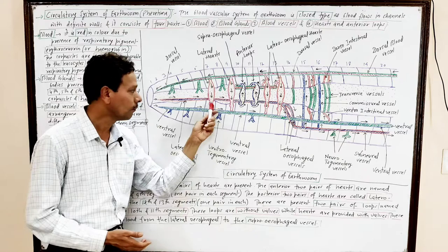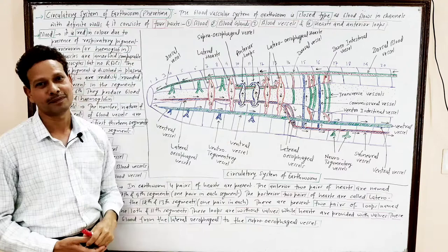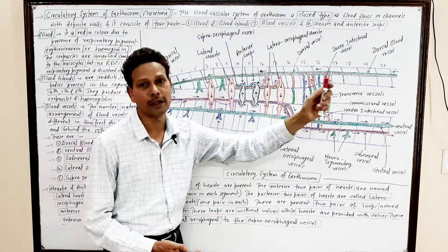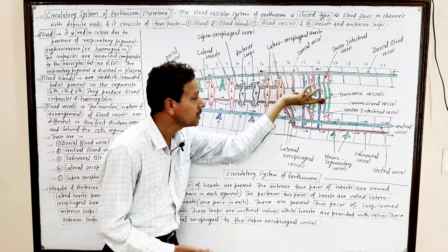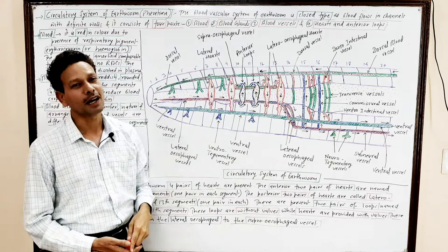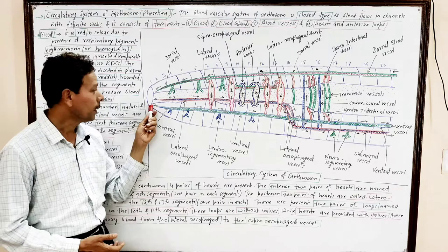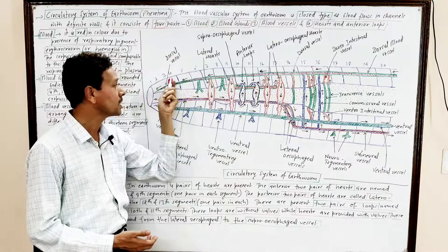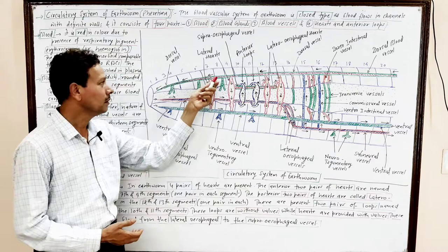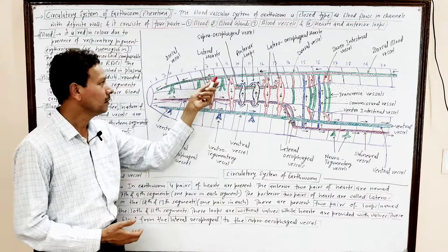The next main blood vessel is the ventral blood vessel. This also extends throughout the body mid-ventrally, lying below the alimentary canal — while the dorsal vessel lies above the alimentary canal. In the ventral blood vessel, blood flows in the backward direction. Valves are present in the dorsal blood vessel, but not in the ventral vessel.